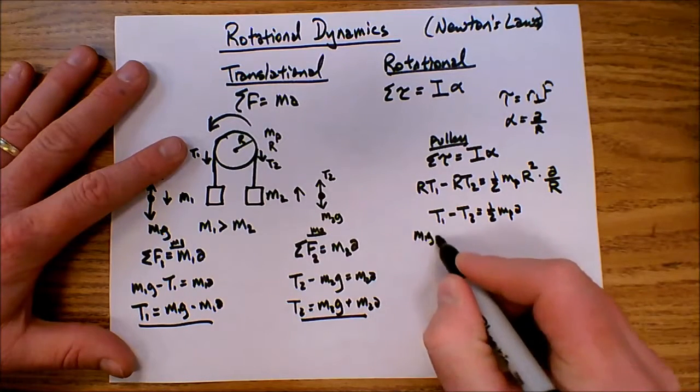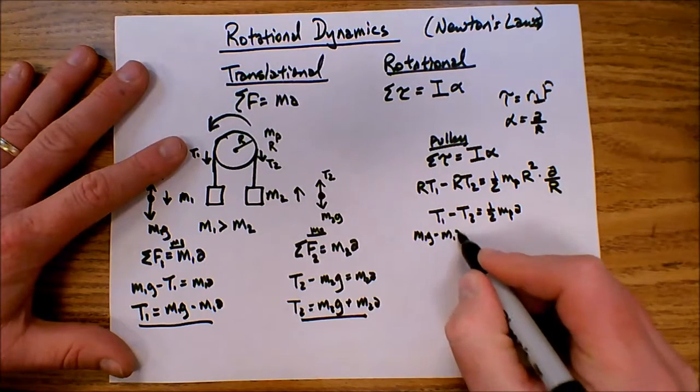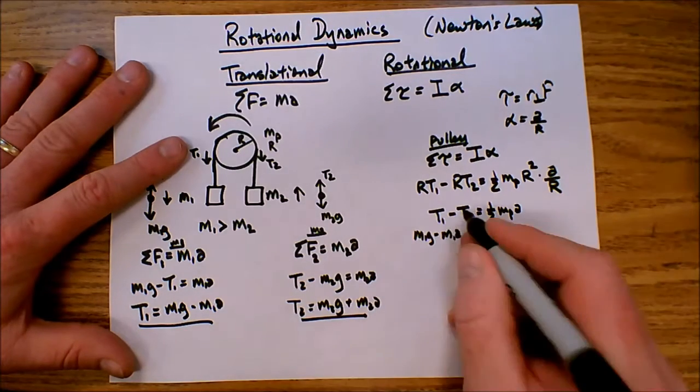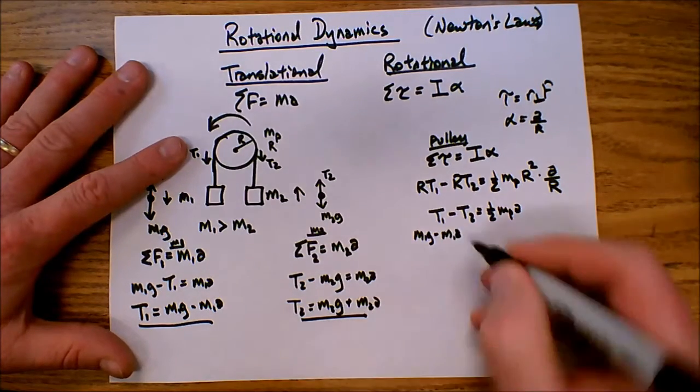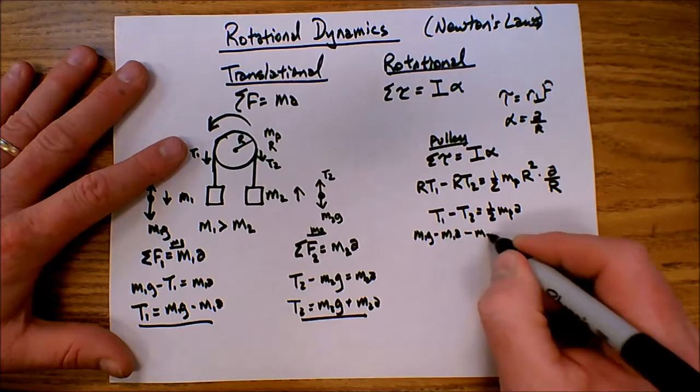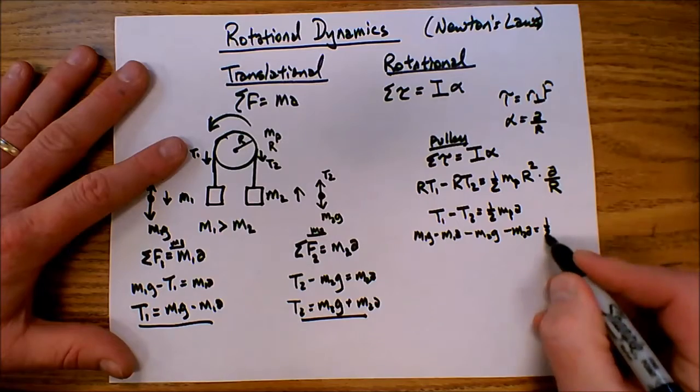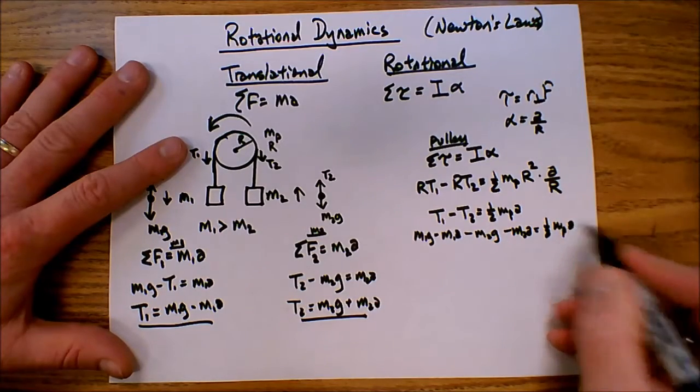So I've got M1G minus M1A, now minus T2, so minus this quantity. I'm going to go ahead and just distribute that minus to both terms, so minus M2G minus M2A equals one half mass of the pulley times A.